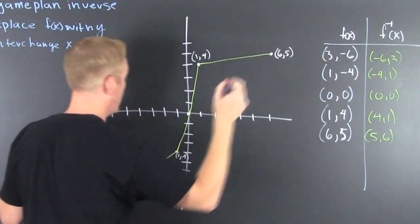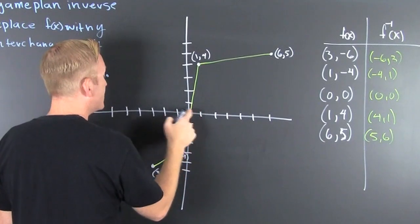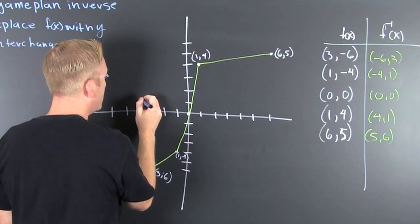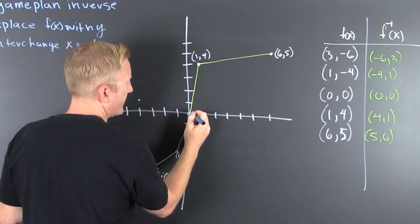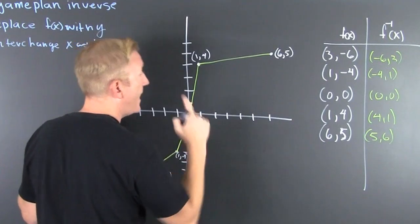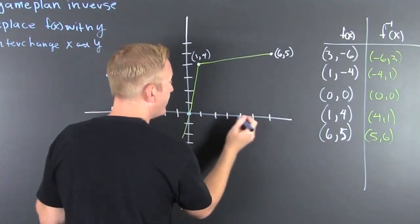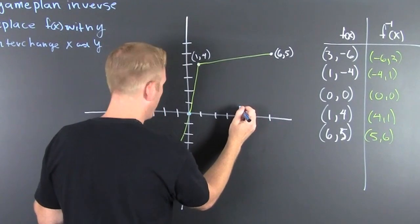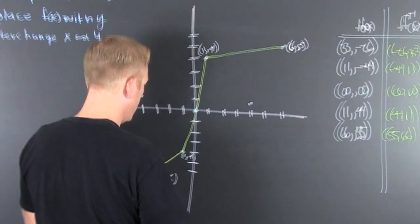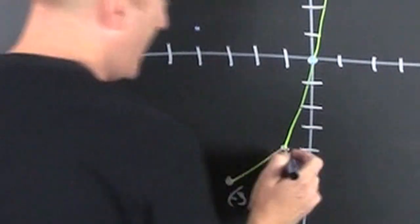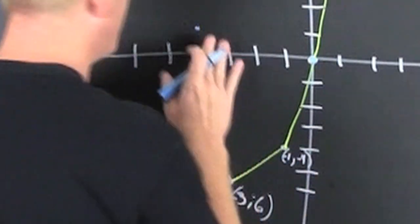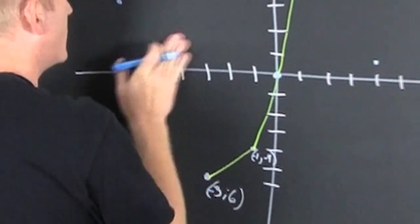And then (0, 0), and then (4, 1). That's a (-3, -6) and a (-1, -4) - those are in the wrong spots.